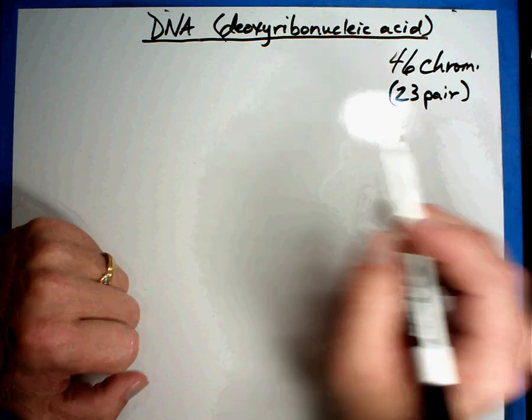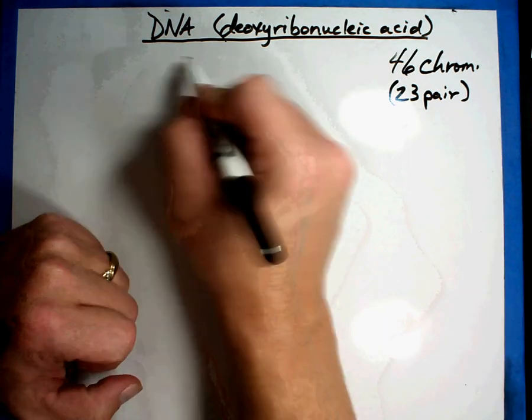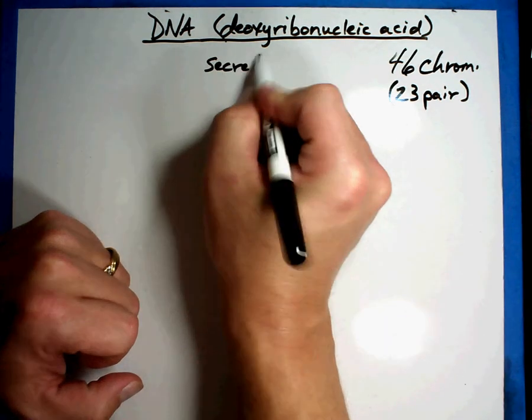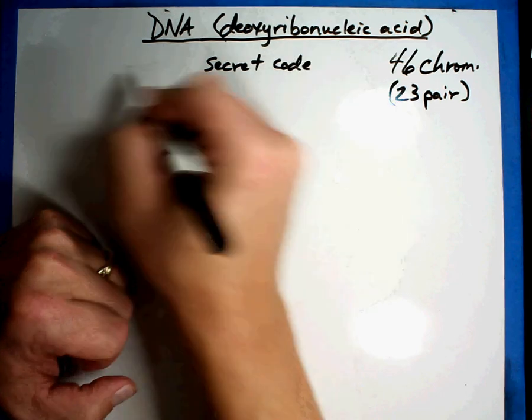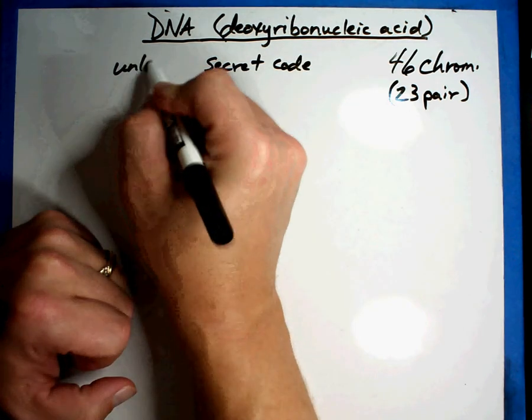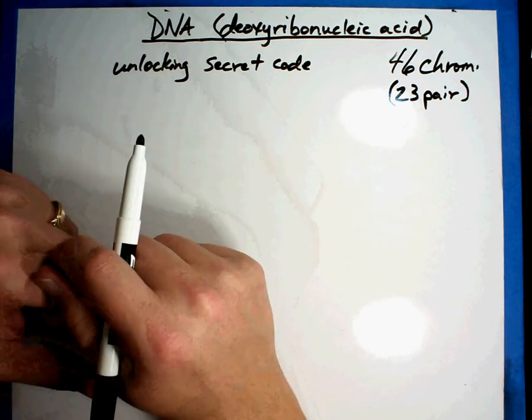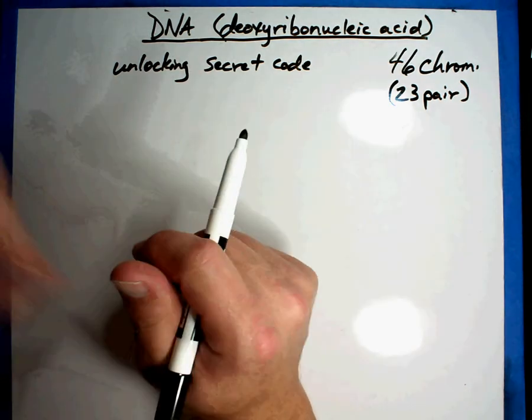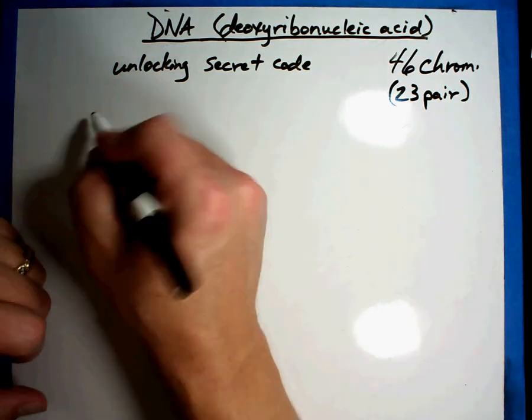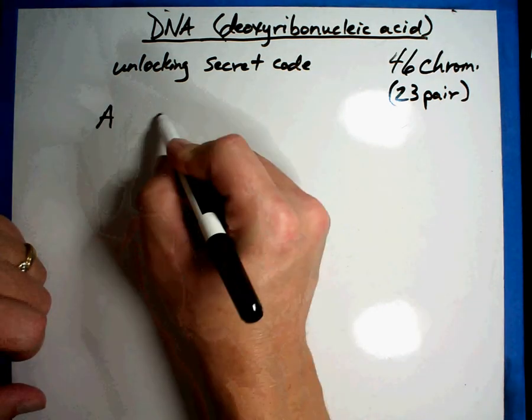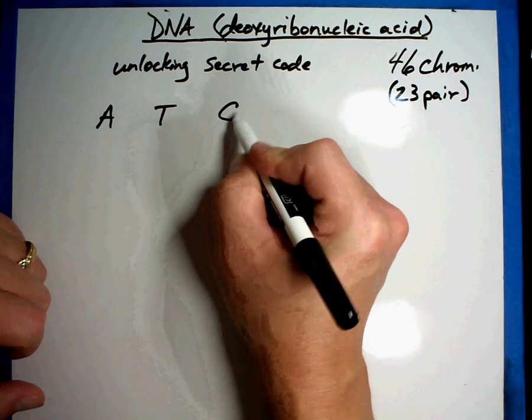Now we haven't always known what DNA was because it was a secret code. As a matter of fact, what we're going to talk about today is the beginning of unlocking that secret code. The problem with DNA was that we didn't know really what it meant. What we found out was that DNA had four different parts.